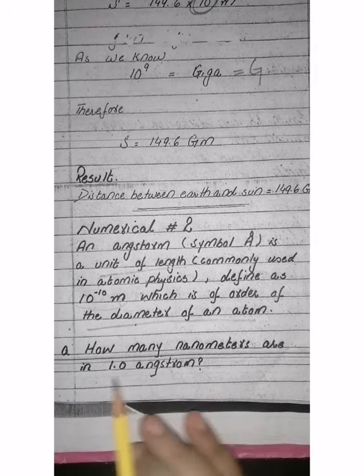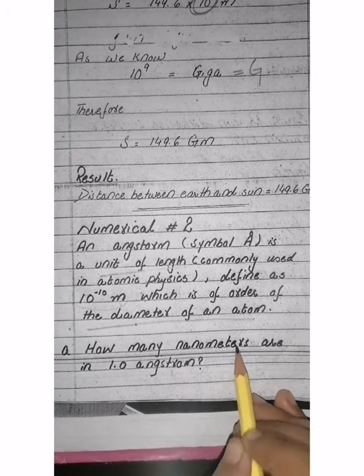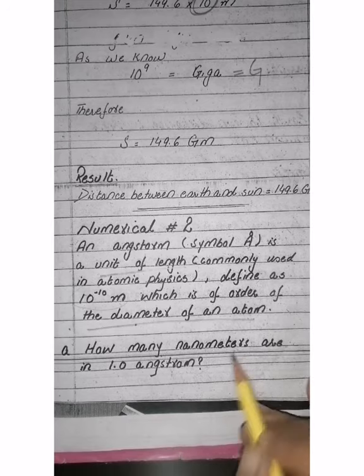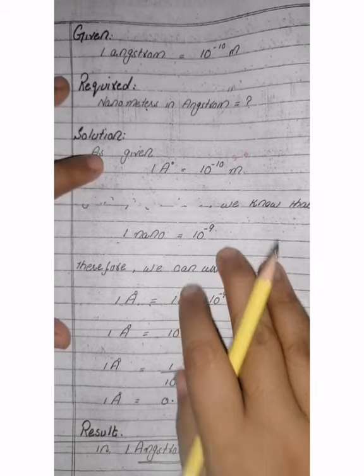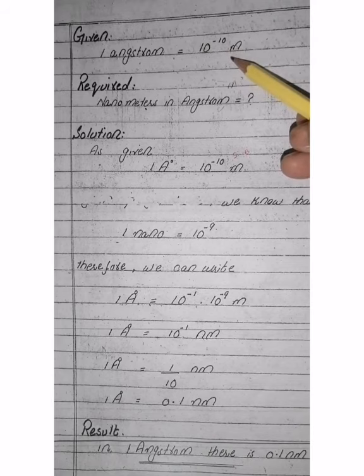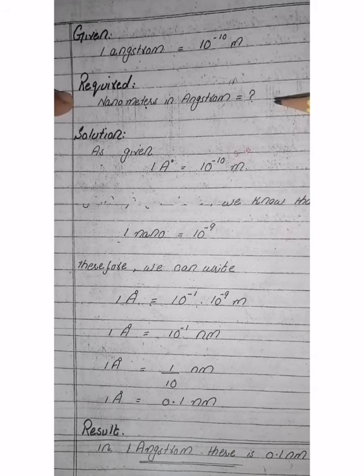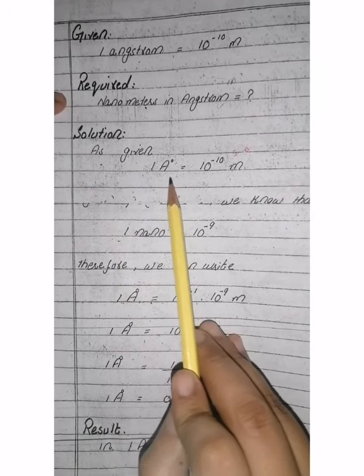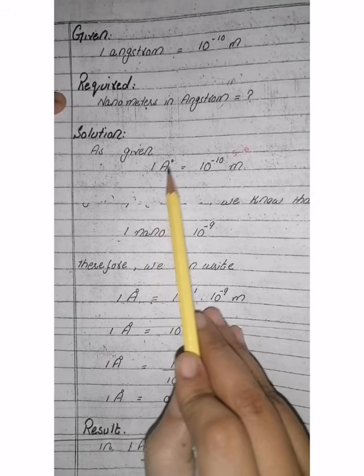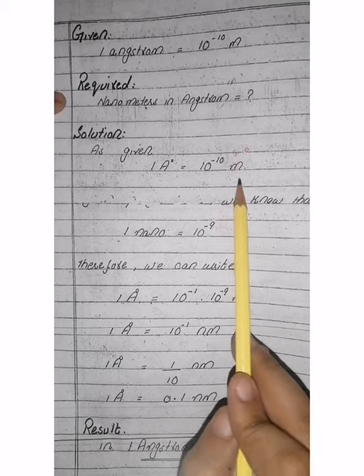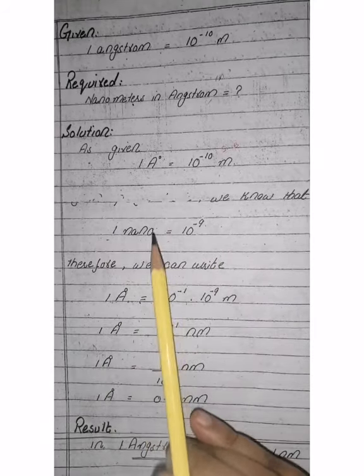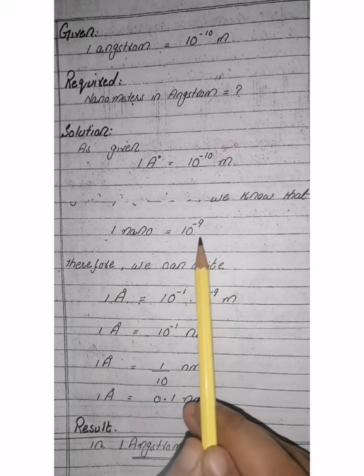Given: one angstrom is equal to 10 raised to the power of minus 10 meters. Required: nanometers in one angstrom = ? Solution: as given, 1 Å = 10 raised to the power of minus 10 meters. As we know from the prefix table, one nano equals 10 raised to the power of minus 9. Therefore, we split 10 raised to the power of minus 10 as 10 raised to the power of minus 9 multiplied by 10 raised to the power of minus 1.